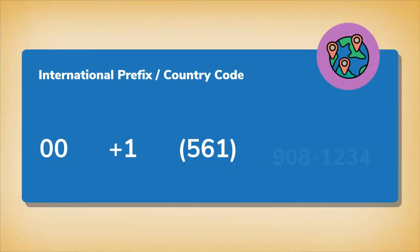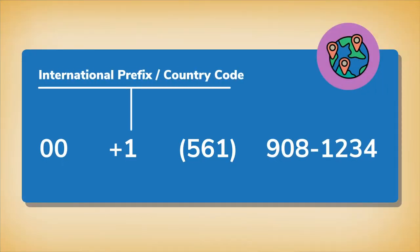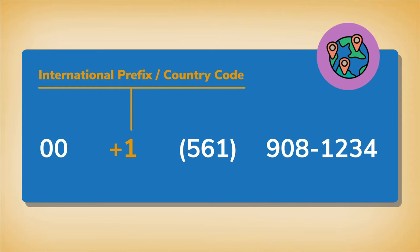Next up is the international prefix or the country code of the place you're trying to call, which typically consists of one to three digits. So you'll dial your destination's country code right after you enter the exit code. Find your international call prefix in our resources link below.